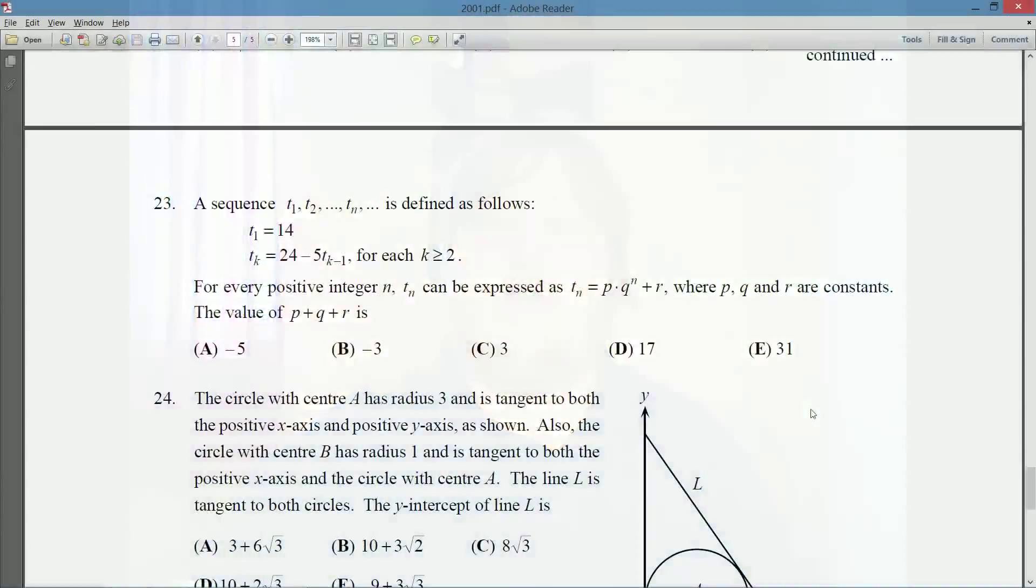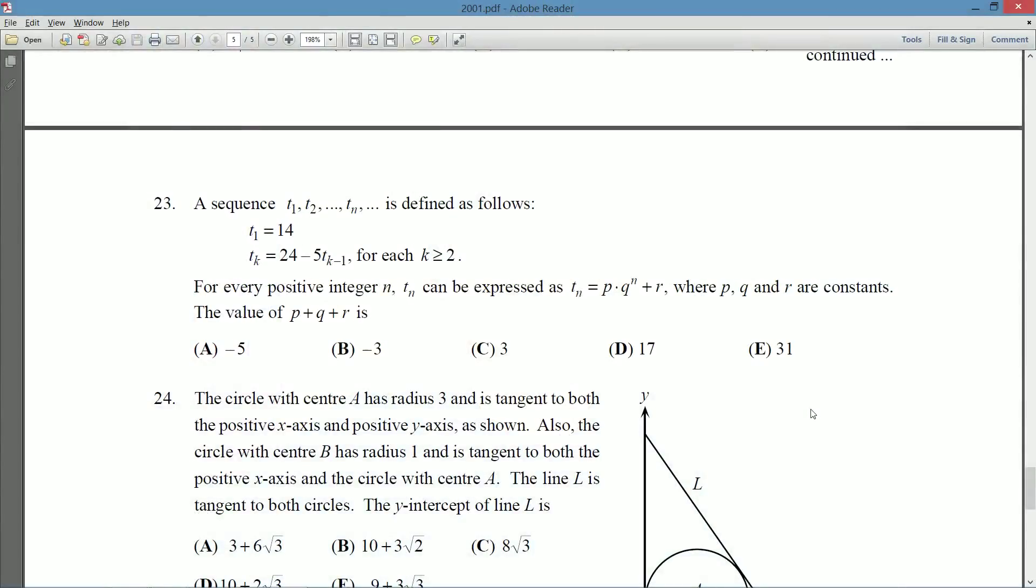We're doing question number 23, so let's take a look, hopefully you've already taken a look at it by getting a copy of the contest for yourself. A sequence T1, T2, all the way up to Tn, is defined as follows. T1 starts off at 14, and then we get each new Tk, for each k greater than or equal to 2, we define it from the previous one, it's 24 minus 5 Tk minus 1.